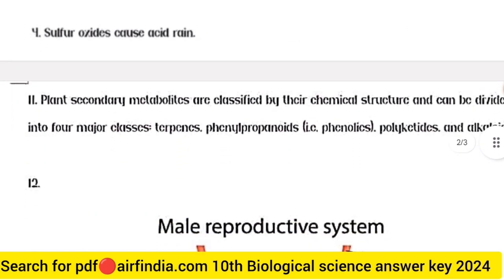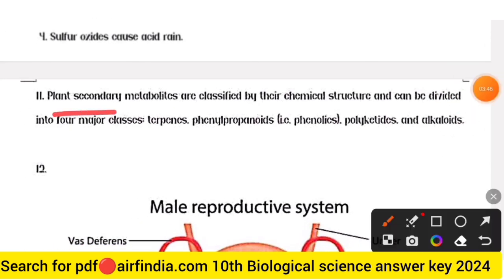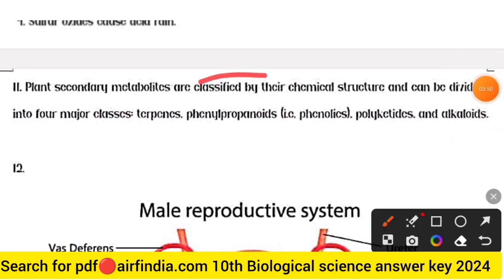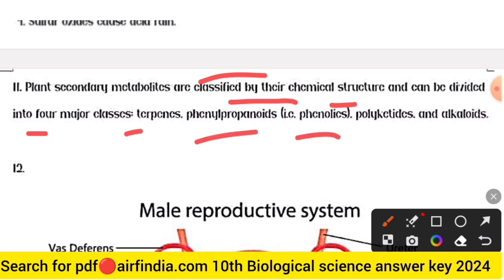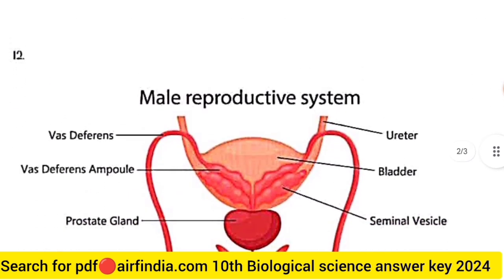Question eleven answer: plant secondary metabolites are classified by their chemical structure and can be divided into four major classes — terpenoids, phenylpropanoids, phenolics, polyketides, and alkaloids.